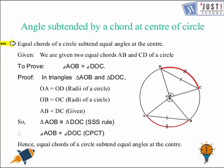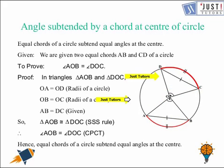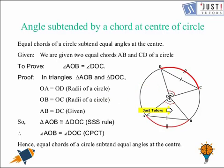Now let's see how we can prove this. We are given two equal chords AB and CD, and we have to prove that angle AOB is equal to angle COD. The two angles marked there need to be equal. We will proceed by proving triangle AOB congruent to triangle COD.